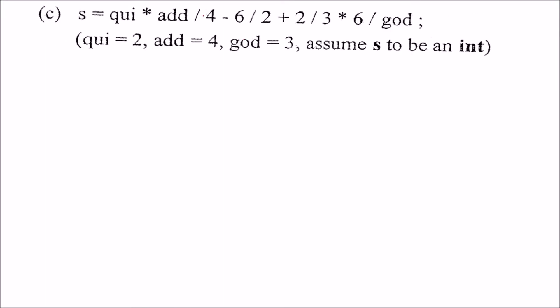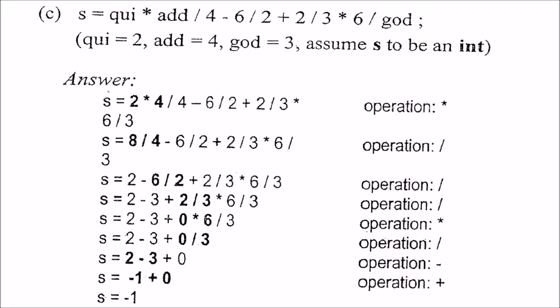Again, the same thing with some additional operators or formations, so we'll put the value. And please see that s is an integer. First we'll do 2 into 4, that will be 8. Then we'll do 8 by 4, that will be 2. Then we have 6 by 2, that will be 3. Then we have this, what we have to do here? See, we'll do this operation first, 2 by 3. 2 by 3 will be, as we know, it will be some 0 point something, but because these two are integer, we'll discard the decimal point, only 0 will come.